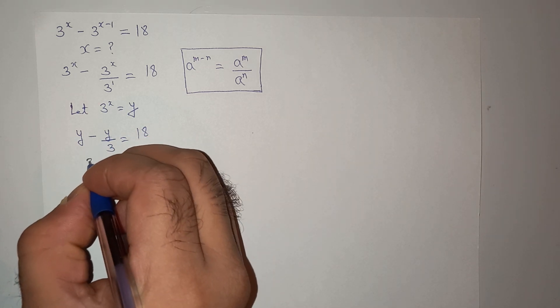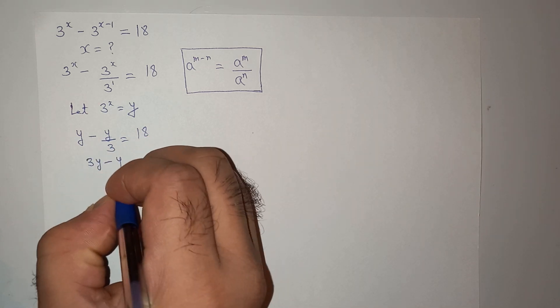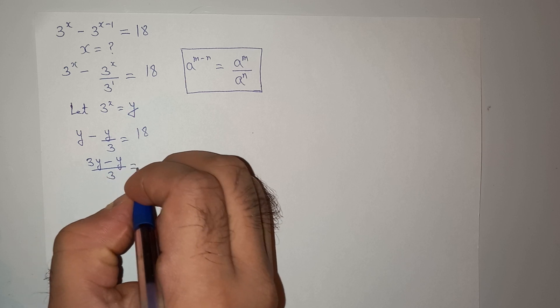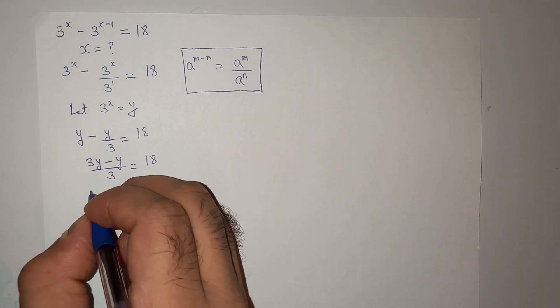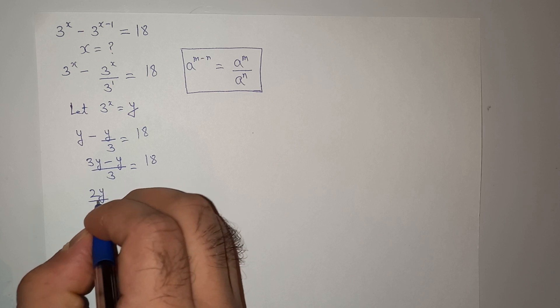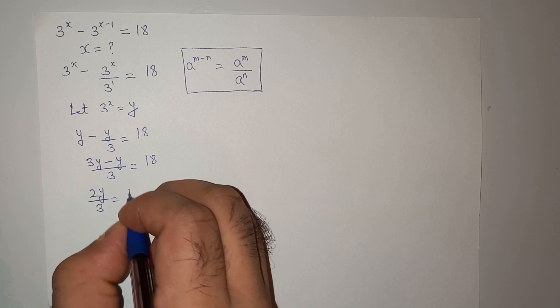We can write this as 3y minus y divided by 3 equals to 18. So this will be 2y divided by 3 equals to 18.